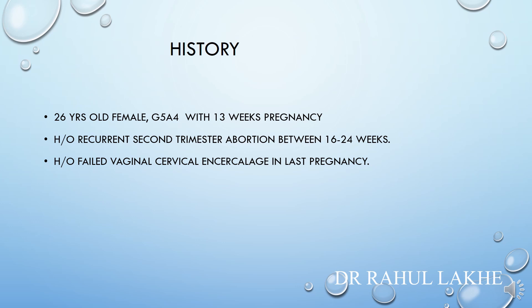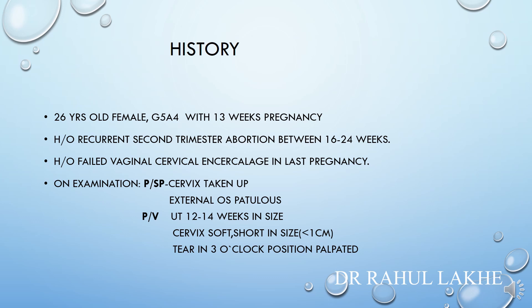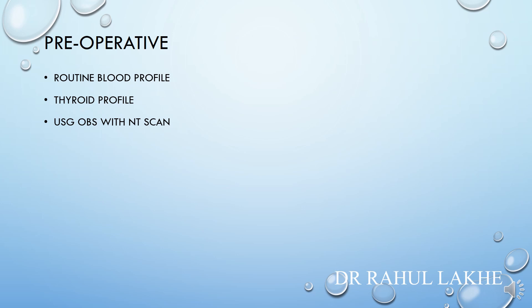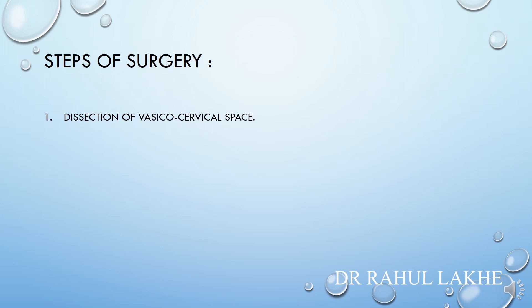She had a failed vaginal cerclage in her last pregnancy. On per speculum examination, the external os was patulous and the cervix was soft, short in size, less than one centimeter. In pre-operative investigations, routine blood investigations were done, thyroid profile to rule out any mid-trimester abortions, ultrasound with anomaly scan to rule out any congenital anomalies and trisomy in the baby, double marker with anomaly scan, and routine consent was taken along with the possibility of abortion.